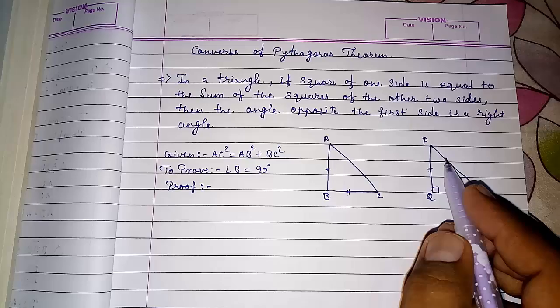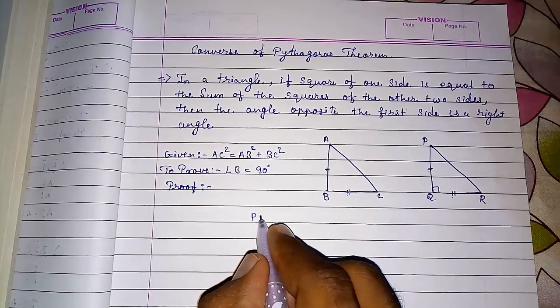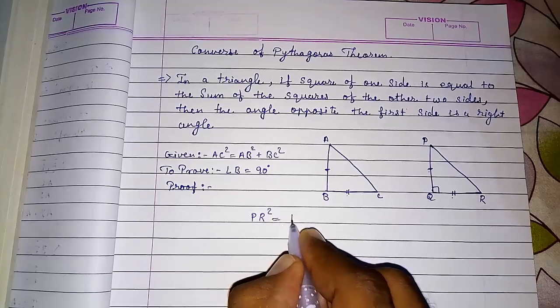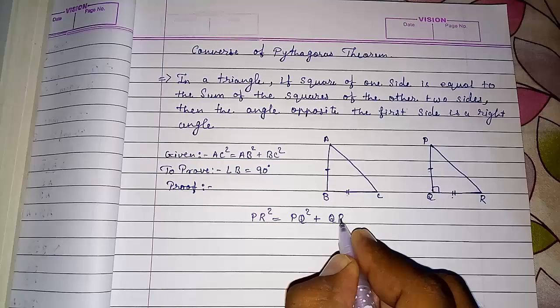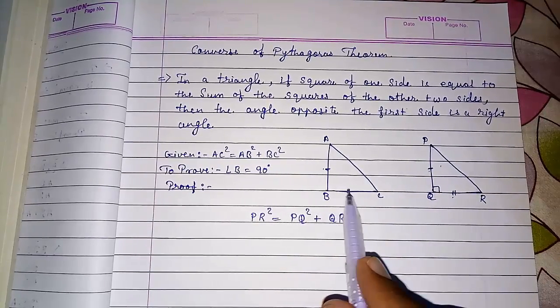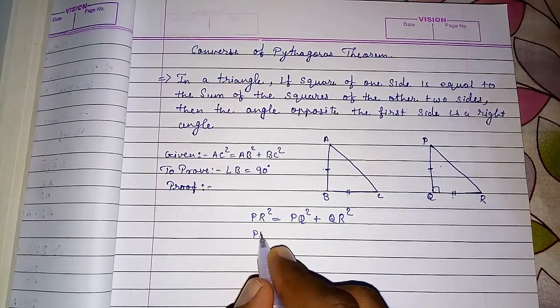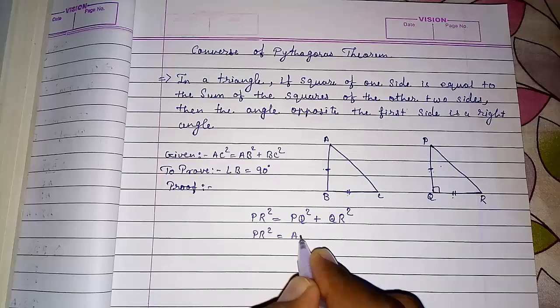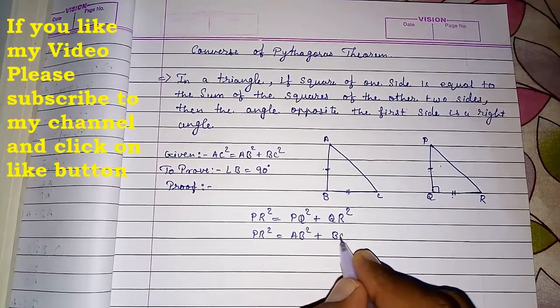Then we know that this is a right angle triangle, so we can write PR² = PQ² + QR². Now we know these two sides are equal and these two sides are equal, so instead of PQ we can write PR² = AB², and instead of QR we can write BC².